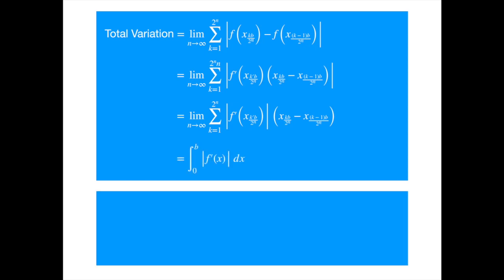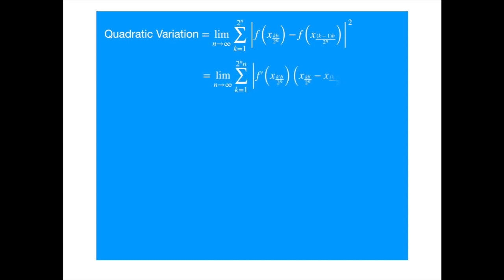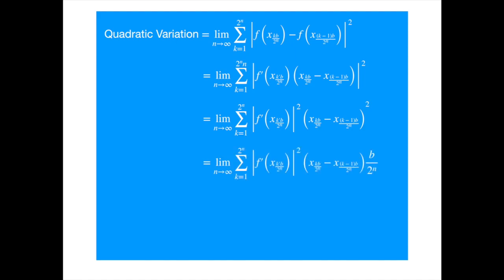Let's use this to calculate the total variation of x squared. We know its derivative is 2x. Integrating its derivative from 0 to 2, substituting the derivative and noting that x is positive over the interval, we get. Evaluating the integral, we get. So the total variation is 4. Now for the quadratic variation, we repeat the same procedure but square the deviations. Applying the mean value theorem and separating the two terms, we get. Now we know the length of each interval is b over 2 to the power n. Writing this as an integral and taking the constant out, we get. Since n is supposed to be large, the quadratic variation is 0.